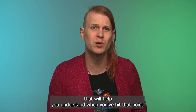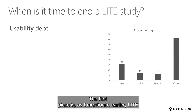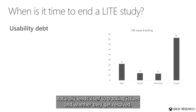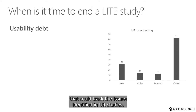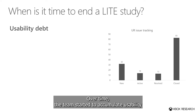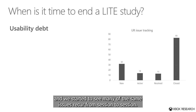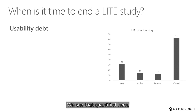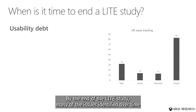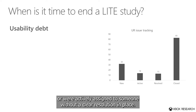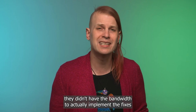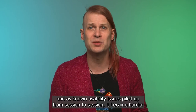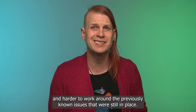But there are signals you can pay attention to that will help you understand when you've hit that point. The first is that LIGHT naturally lends itself to tracking issues and whether they get resolved. For this product, any time I would do a debrief, I would track whether or not the team was aligned on each issue. Issues we aligned on would be filed in Visual Studio, and I worked with the team to create queries that could track the issues identified in UR studies. Over time, the team started to accumulate usability debt in the product, and we started to see many of the same issues recur from session to session. By the end of the LIGHT study, many issues had been closed out, but nearly 40% were either new and unassigned, or actively assigned to someone without a clear resolution in place.